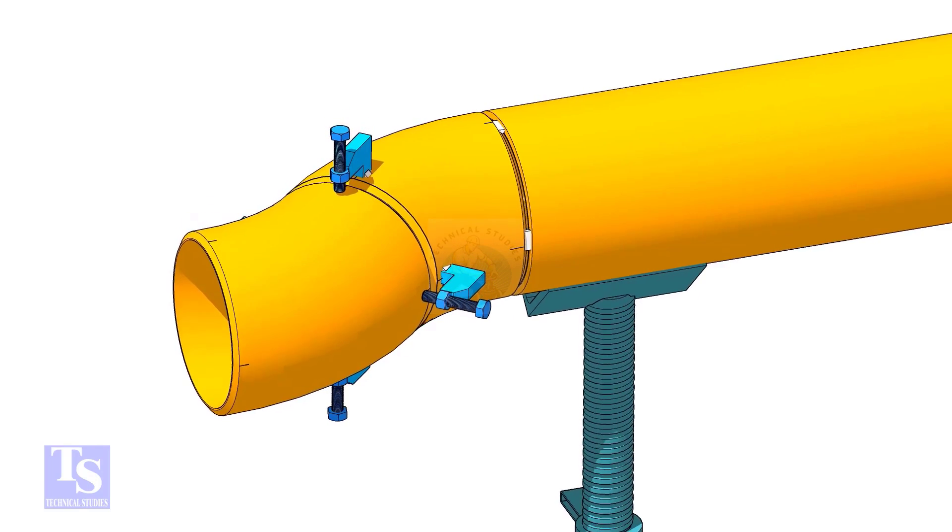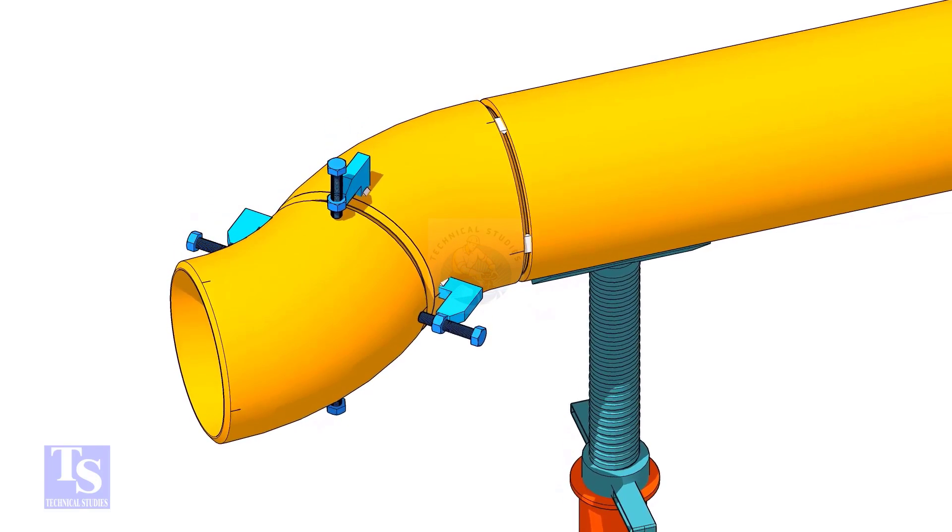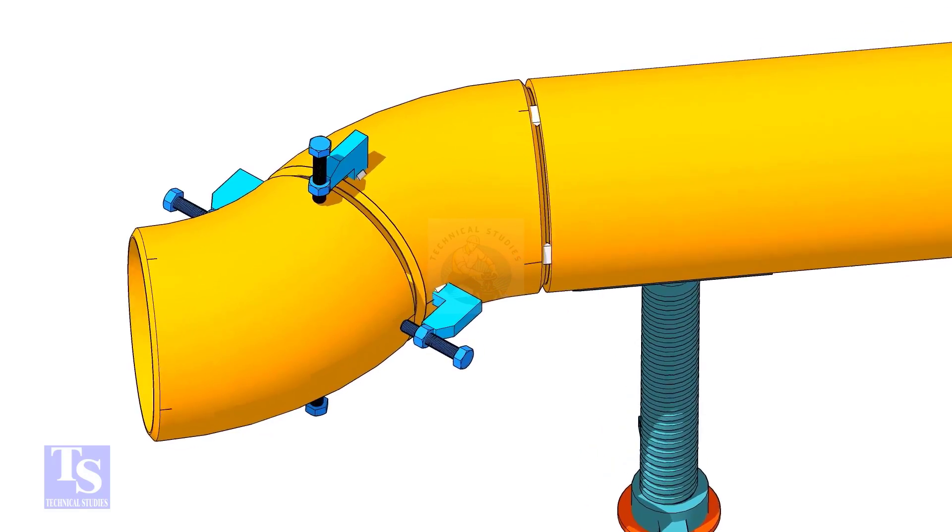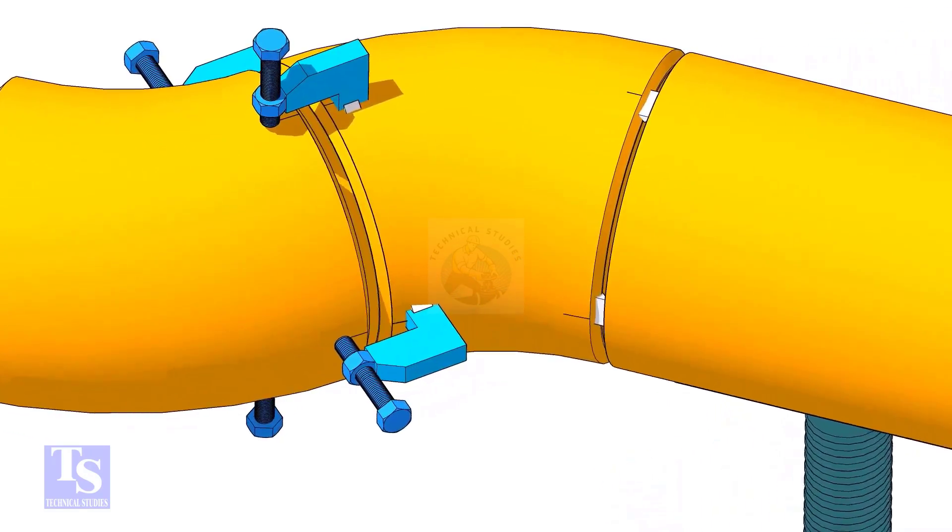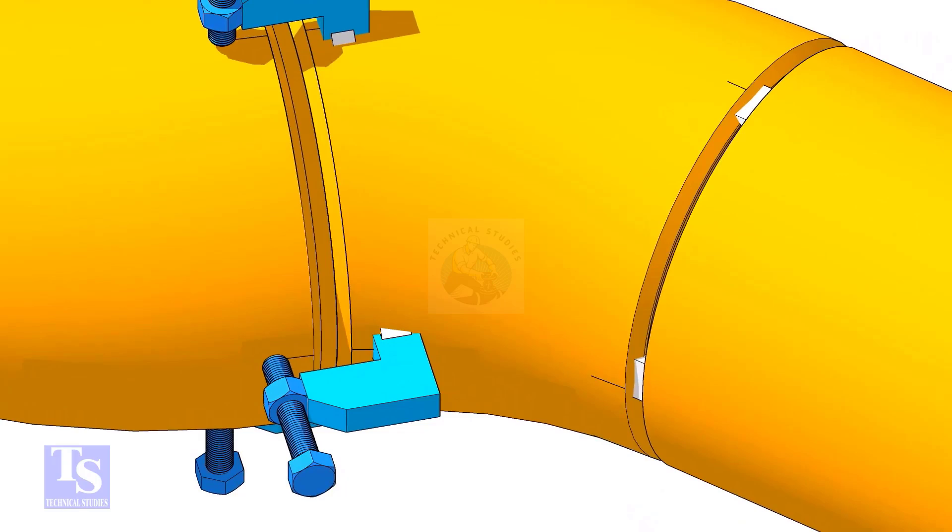Put the other elbow in the jack bolts and match the center lines of both elbows. Put the gap rod between the elbows and maintain the required gap.